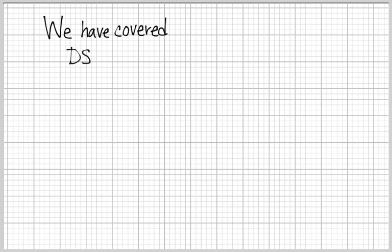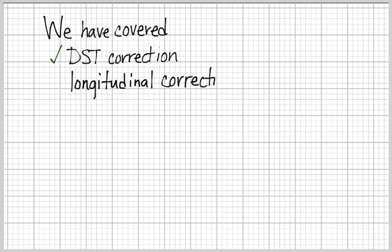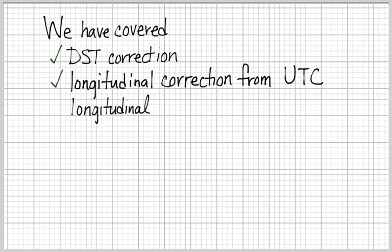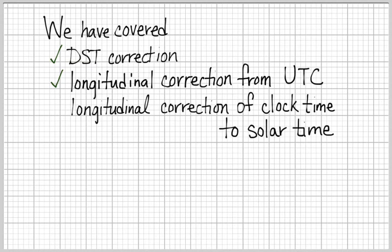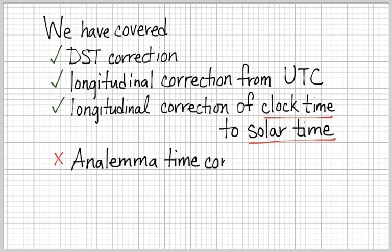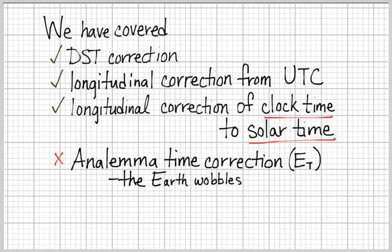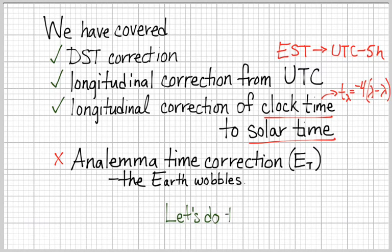So far, we have covered daylight savings time correction, it is a one-hour addition. We've done a brief demonstration of longitudinal correction, the number of time zones or standard meridians over that we've had. Then we did the minor correction of longitudinal correction of clock time to solar time, where the number of minutes that I have to wait for the sun to go from Philadelphia to arrive finally at State College. Now, we're missing one chunk, and that piece is the time correction because of the wobble of the Earth.